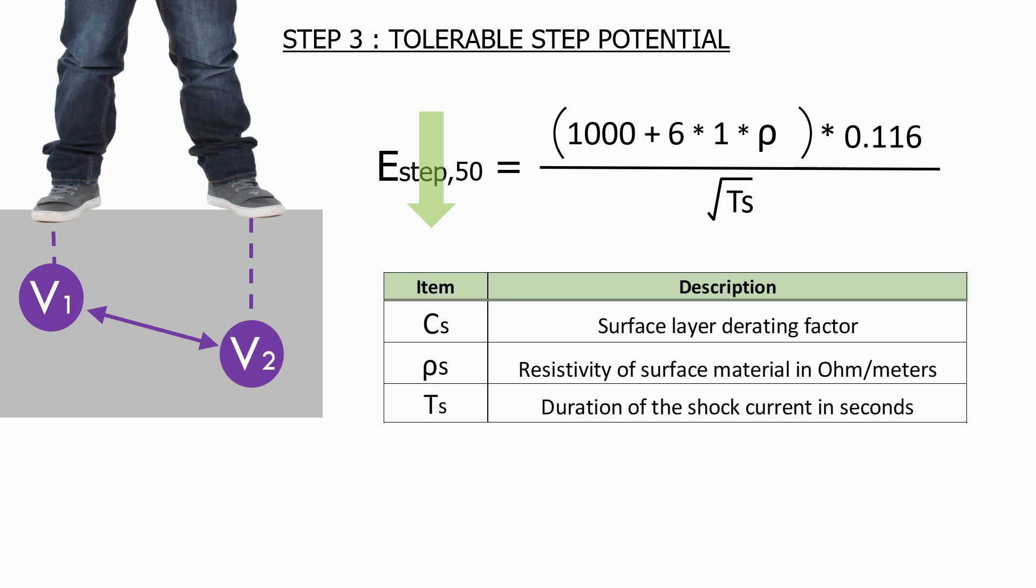This makes sense. If there is no high resistivity surface material, then the substation becomes more hazardous, and you would expect the tolerable step potential to drop accordingly.